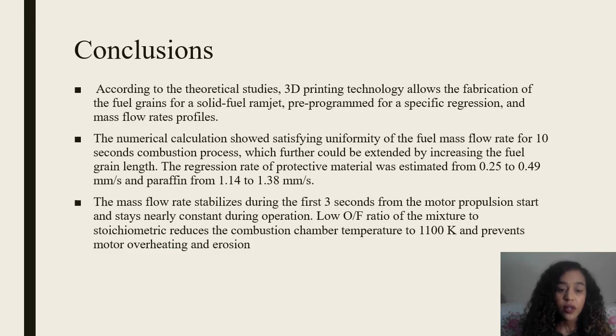Conclusions: According to the theoretical studies, 3D printing technology allows the fabrication of the fuel grain for a solid fuel ramjet, pre-programmed for a specific regression and mass flow rate profiles. The numerical calculations showed satisfying uniformity of the fuel mass flow rate for 10 seconds combustion process, which further could be extended by increasing the fuel grain length. The regression rate of protective material was estimated from 0.25 to 0.49 mm per second and paraffin from 1.14 to 1.38 mm.